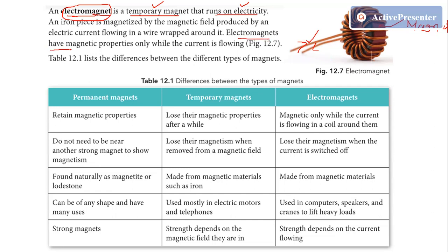Electromagnets behave like a magnet only when current is flowing through the wire. So when will they behave like a magnet? Whenever current passes through the wire. And as soon as we switch off the current, it will lose its magnetism — it will become a normal iron ring again and will not behave like a magnet. So an electromagnet behaves like a magnet only when current is passing through it, making it a type of temporary magnet, not a permanent magnet.